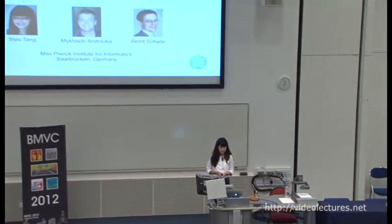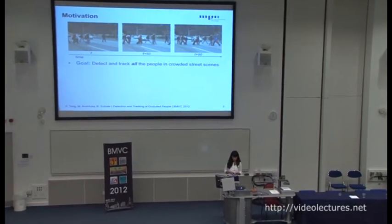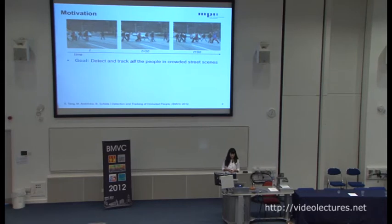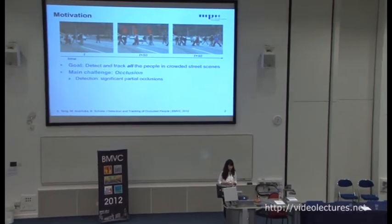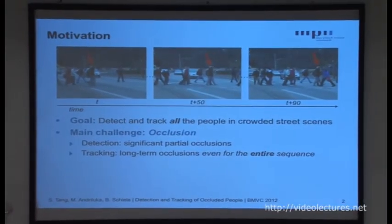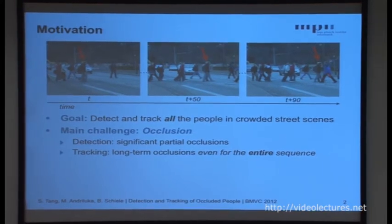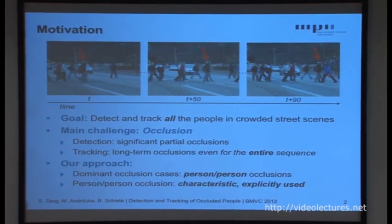The video here shows a typical street crossing scene with many people occluded. The goal of our work is to detect and track all the people in such crowded street scenes. Here are three example images from the crossing sequence. It is very challenging to detect and track all the people in such scenes mainly because of occlusions. On a single image, the pedestrian detection becomes very difficult because of significant partial occlusions. And for tracking across the sequence, a certain number of people are under long-term occlusions even for the entire sequence, which makes the tracking fail in such cases.